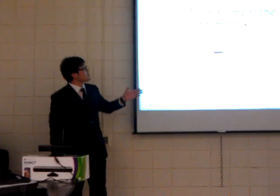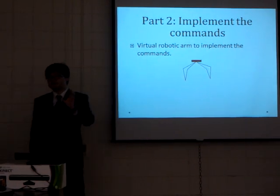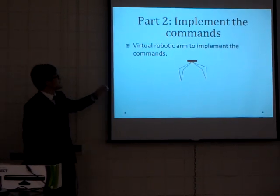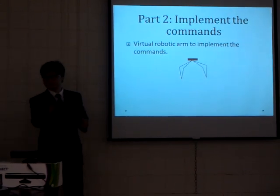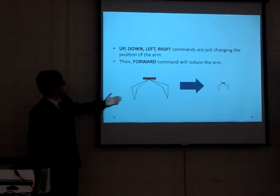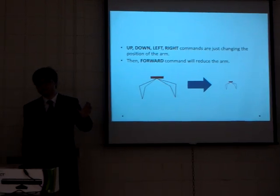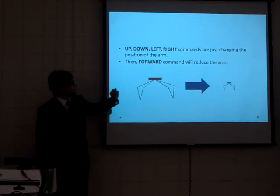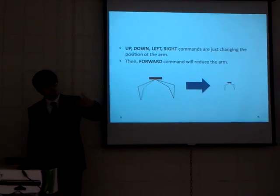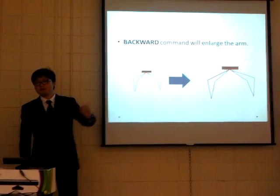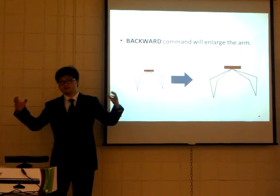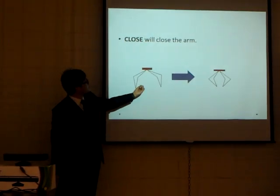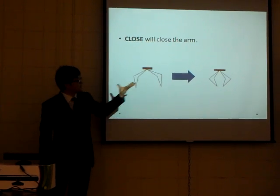The second part is the robotic arm project. Since we don't have a real robotic arm, I built a virtual software to simulate one using Adobe Flash. This virtual robotic arm implements the commands: up, down, left, and right commands change the position of the arm. The forward command reduces the arm size to represent moving forward, while the back command makes it larger to represent moving backward. The close command closes the fingers of the arm, and open does the opposite to open the fingers.